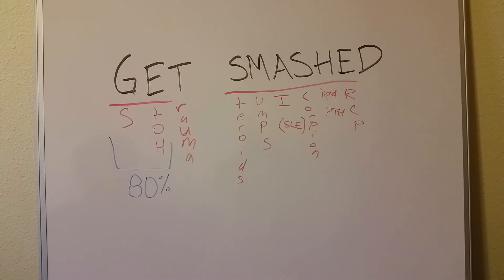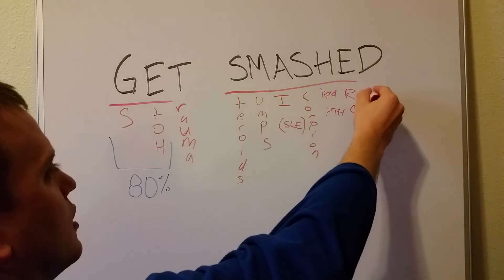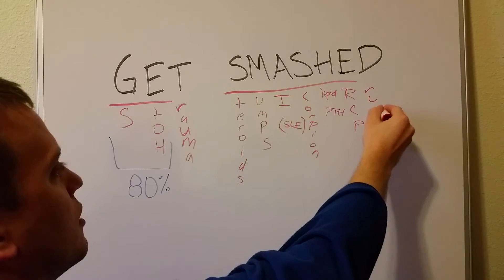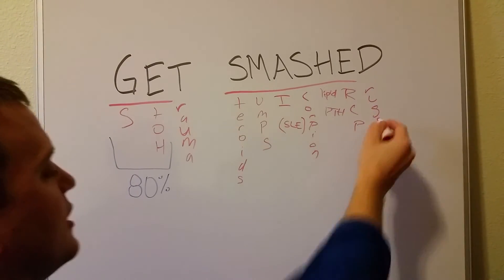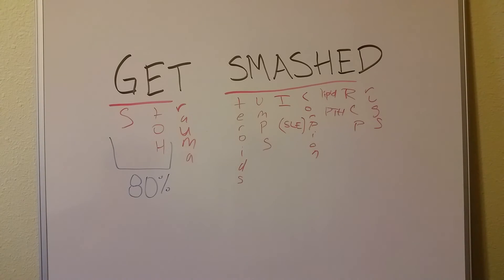And the last D is going to be drugs. Specifically, azathioprine — which is an immunosuppressant — and valproic acid seem to be the most common ones we see in our cases. Valproic acid is a common anticonvulsant with a lot of different side effects.